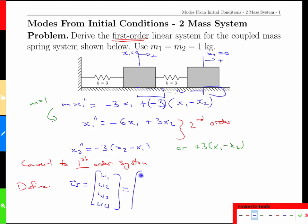What we build it as is x1 and x1's derivative, so position and velocity, and x2 and x2 prime, position and velocity.